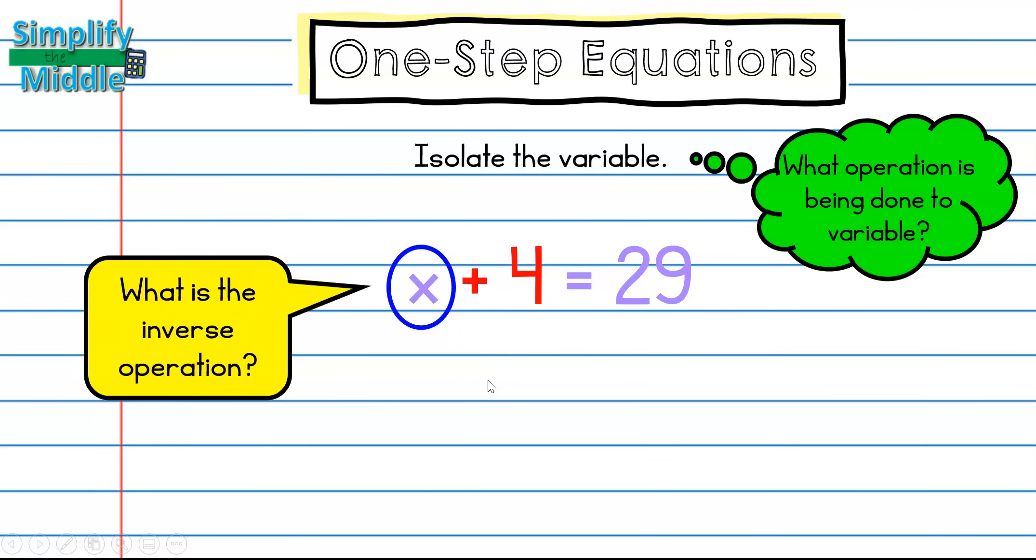So what is the inverse operation of addition? Subtraction! So I will subtract 4 from both sides. These 4s will cross out because this becomes a 0 pair. Positive 4 minus 4 is 0. So then I end up with x equals 25.